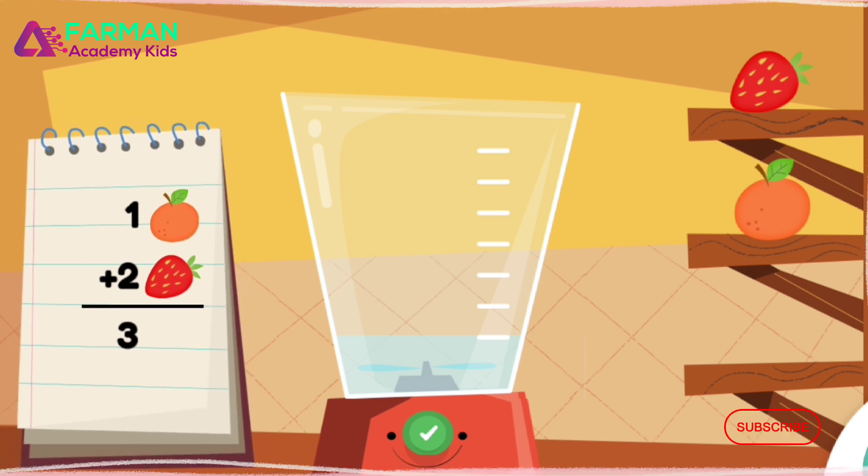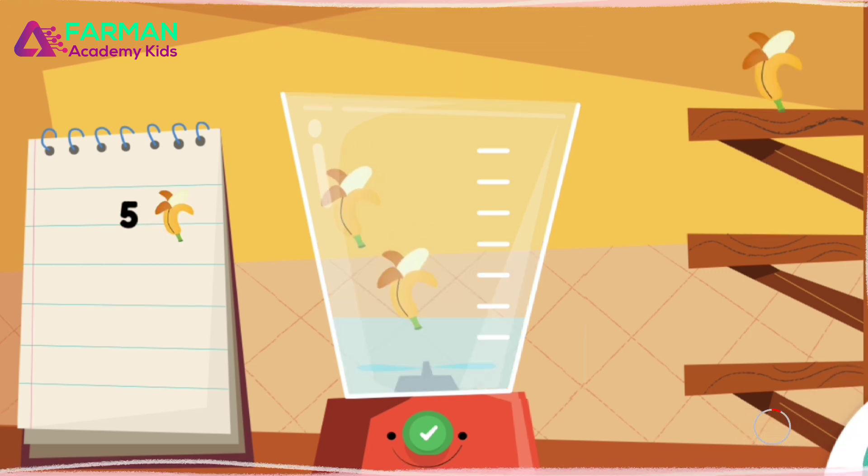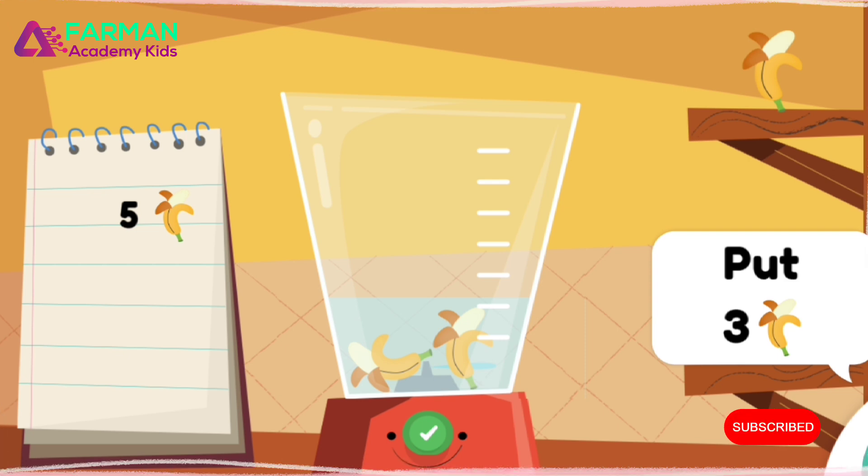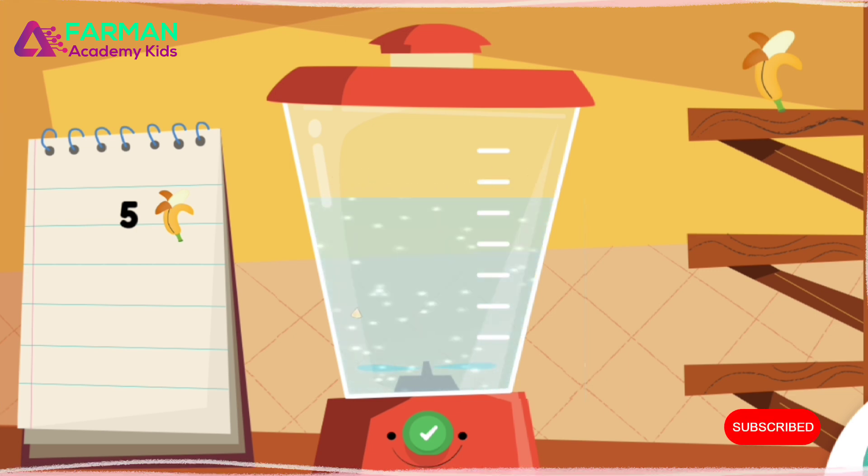Put one piece of orange into the blender. Keep it up. Follow the recipe on the notebook to make a smoothie. Press the green button when you are done. Put three more pieces of banana into the blender. Drag ingredients from the shelf into the blender. Keep up the good work.